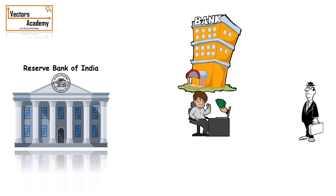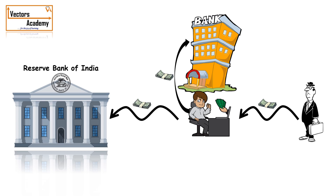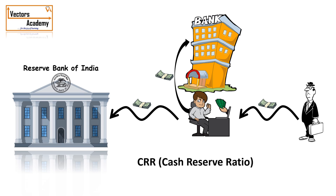Now if the customer deposits some money in the bank, not all the amount goes to the bank's wallet. It has to give some amount of that money to the RBI. The exact amount to be given to the RBI is decided by the Cash Reserve Ratio. So if the cash reserve ratio is 5% and the customer deposits 1000 rupees in the bank, then 5% of it, that is 50 rupees, goes to the RBI and the remaining amount goes to the bank's wallet.